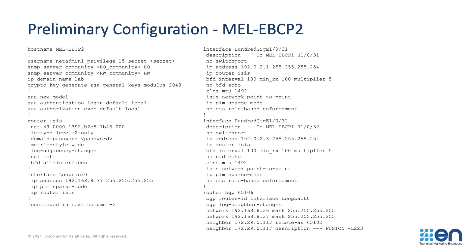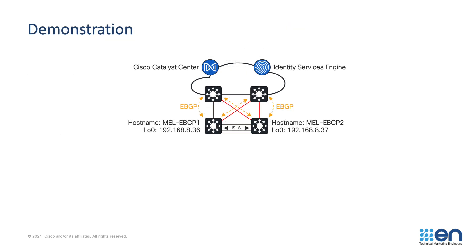For MEL-EBCP1, you can pause the video and review the commands, but we've set credentials for user login and SNMP login, configured IS-IS, a loopback address, two routed interfaces to EBCP2, and started the BGP process advertising EBCP1 and EBCP2 loopback 0 addresses into the existing network. The preliminary configuration on EBCP2 is more or less the same, just with incremented IP addresses and a different hostname. With that preliminary configuration applied and both routing protocols BGP and IS-IS up, the loopbacks of EBCP1 and EBCP2 are reachable to Catalyst Center, where we can discover these switches and set them as LAN automation seeds — a primary seed and a secondary seed.